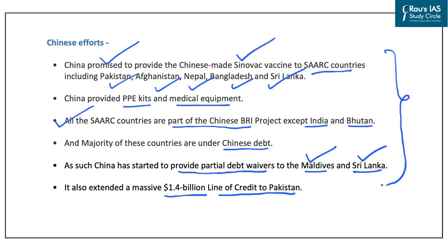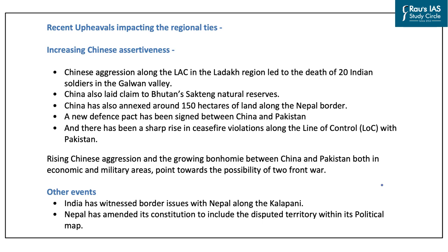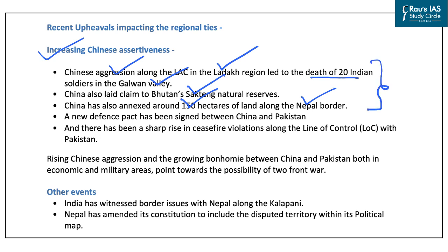China has been aggressively undertaking steps to increase its influence in SAARC countries, posing a big challenge for India. Besides COVID-19 competition, various events have adversely impacted regional ties and India's foreign policy goals. Chinese aggression along the Line of Actual Control in Ladakh led to the death of about 20 Indian soldiers in Galwan Valley. China has also laid claim to Bhutan's Saktang natural reserves and annexed around 150 hectares of land along the Nepal border.